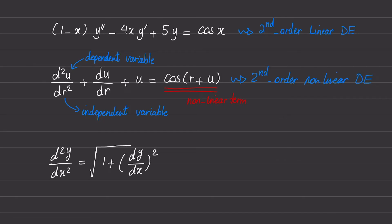Here is the third and last differential equation. On the left hand side we have the second order derivative that goes to the power of one and its coefficient is constant, so this is a linear term. On the right hand side, dy/dx is the first order derivative that goes to the power of two, making it a nonlinear term. So this differential equation is a second order nonlinear differential equation.